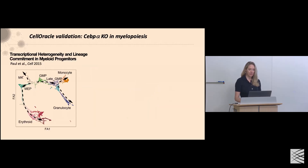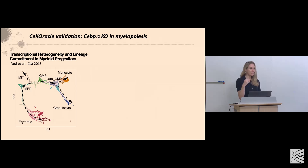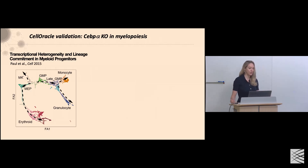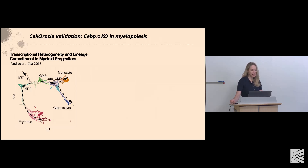In terms of validation, the core output of Cell Oracle is these vectors. But how do we begin to interpret these within a dynamic biological system? For the first point of validation, we turned to mouse hematopoiesis, which has been so well characterized in terms of how transcription factors behave in that system. We turned to a single-cell atlas of myeloid progenitor differentiation published in 2015 from Edo Amat's lab, showing progenitor differentiation down into granulocytes, monocytes, and down the erythroid lineage.